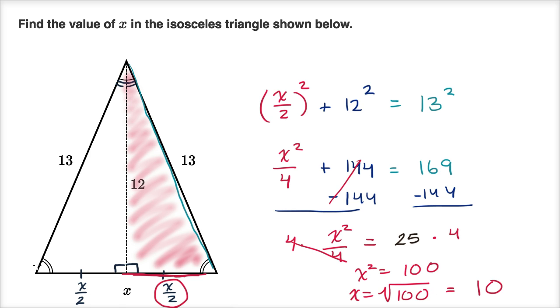So there you have it, we have solved for x. This distance right here, the whole thing is going to be equal to 10. Half of that is going to be five. So if we just looked at this length right over here,